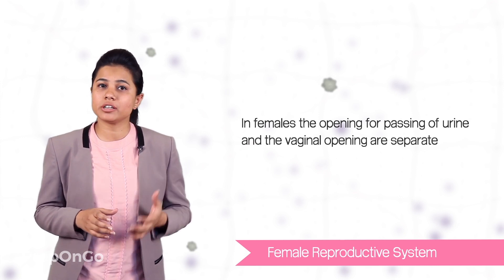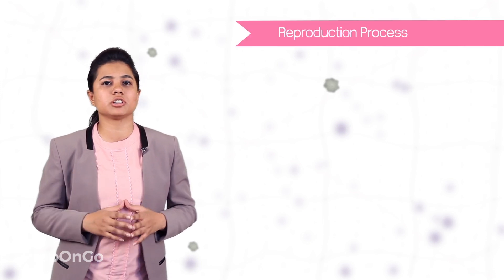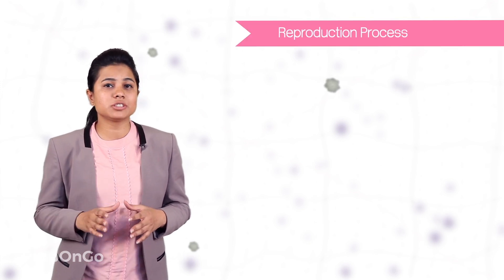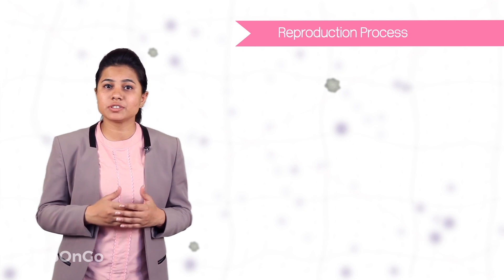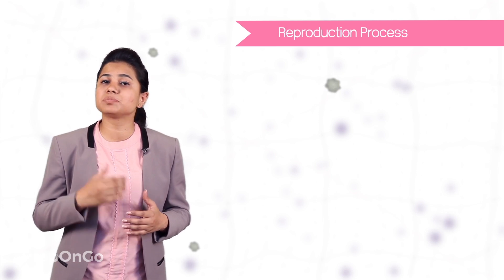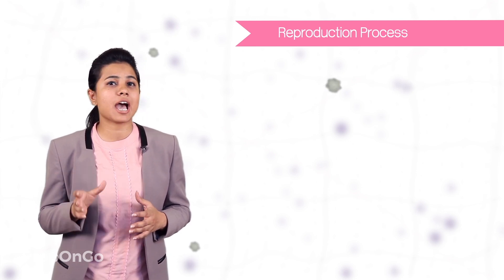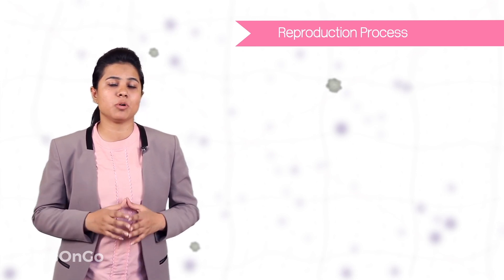Now we have understood the male reproductive system and the female reproductive system. Let's understand the reproduction process. In the last video, we have seen how the sperms were produced and are carried in the male body.